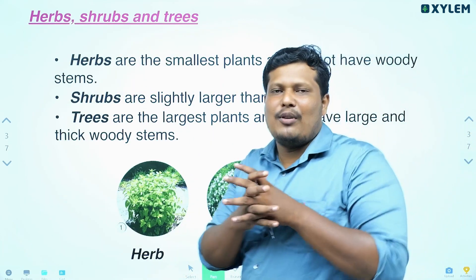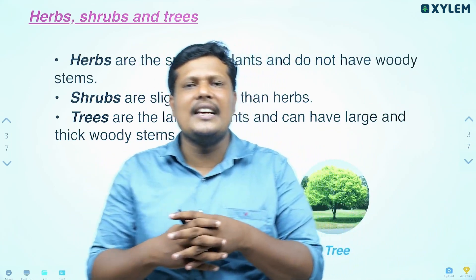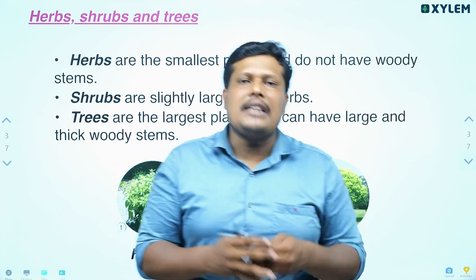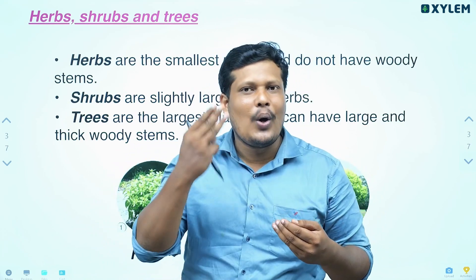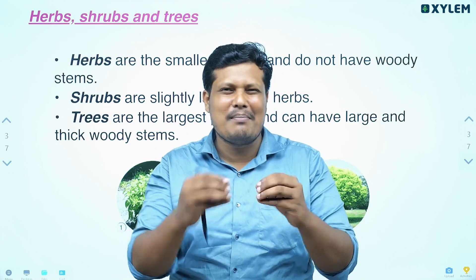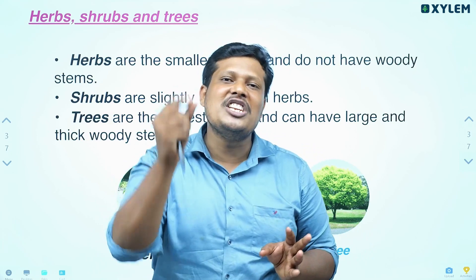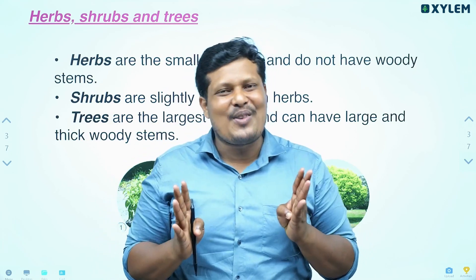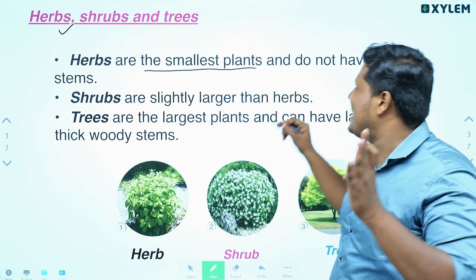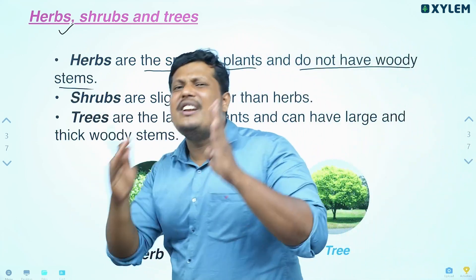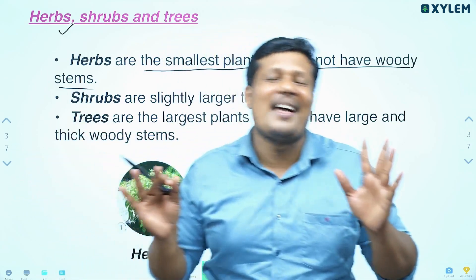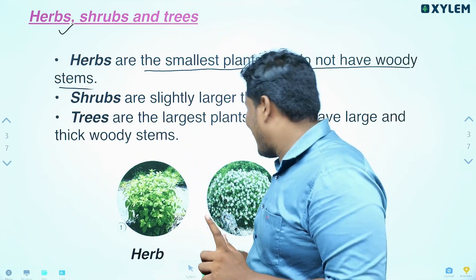There are many plants — there are trees, shrubs, herbs, etc. There are three types of plants. The first plant is called herb. It has a very soft, greenish stem. It is the smallest plant, with a soft and green tender stem.